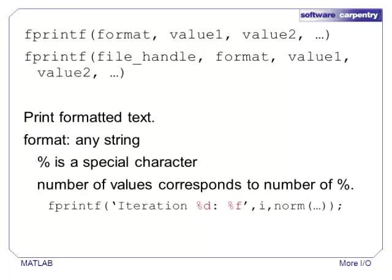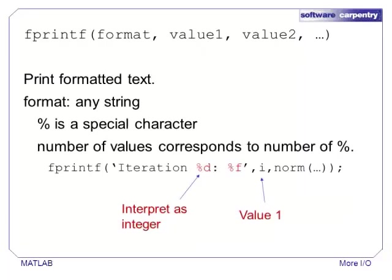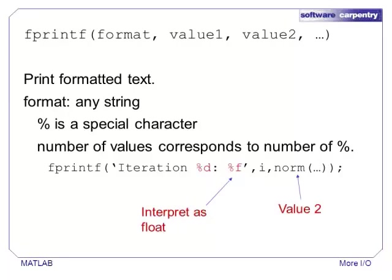fprintf is mirrored on the printf statement from C or Fortran. The important input is format, which is a string that contains special escape sequences that start with a percent sign. Each percent sign corresponds to another parameter that will be printed at the specified location. The numbers and digits that follow a percent are hints on how to format the number. For instance, %d means to interpret the corresponding value as an integer, and %f means to interpret the value as a floating point number. There is a long list of formatting symbols available at the online help for fprintf.